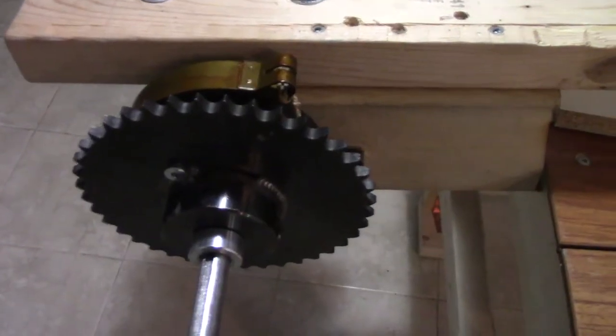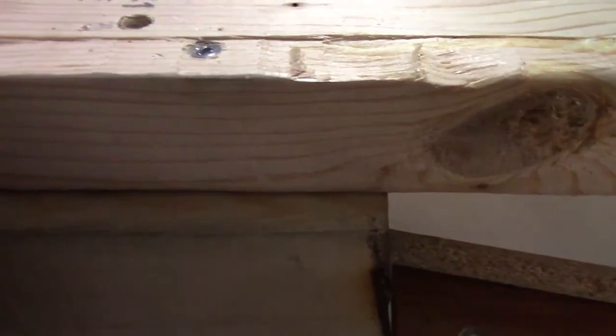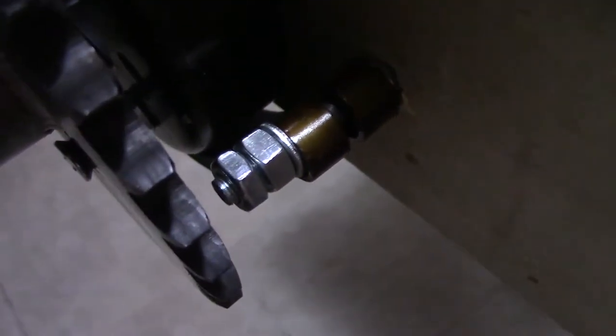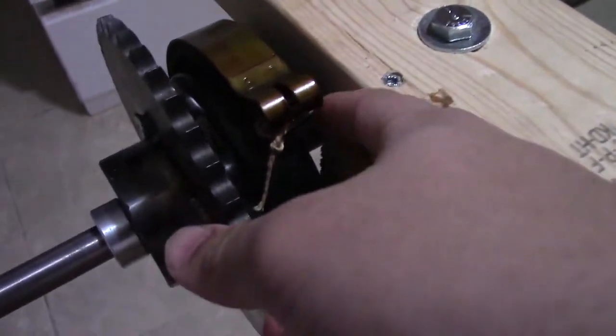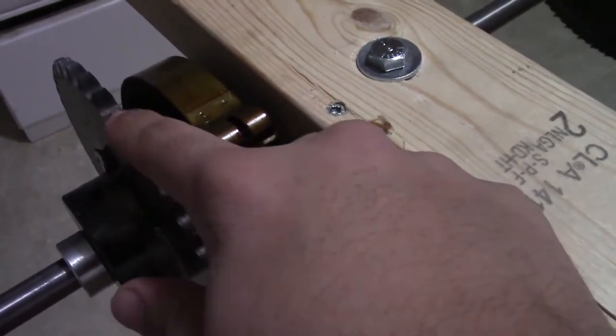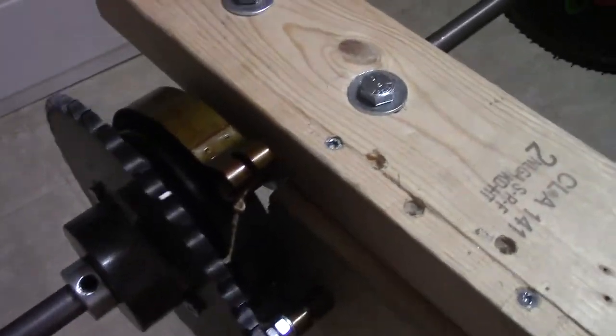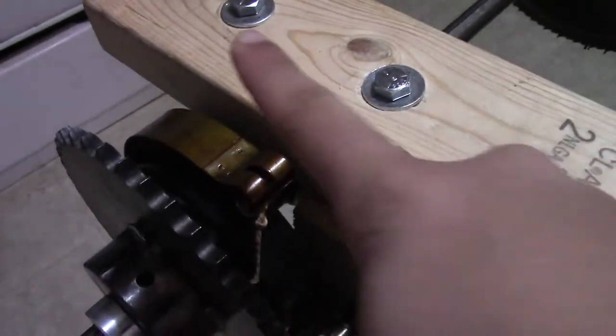Alright guys, so this piece of wood right here I cut, and this is what holds the bolt. The bolt holds the bottom of the brake band. I put some washers on this side and this side, and I put two bolts on it so it doesn't come loose at all. So the sprocket spins freely without stopping.